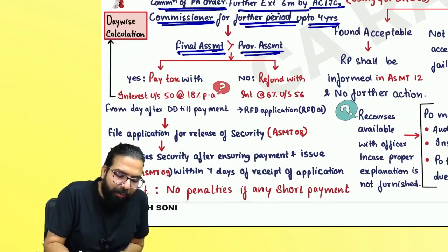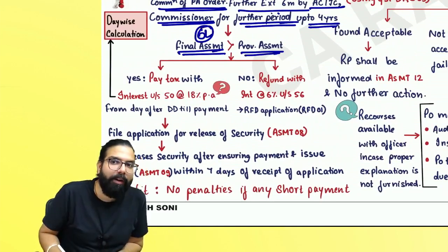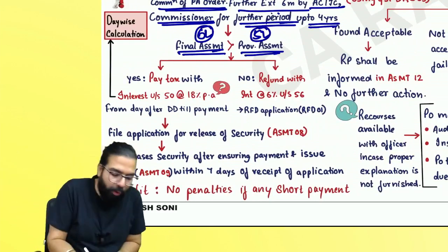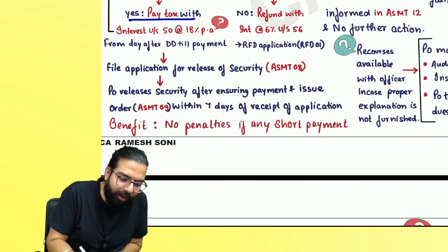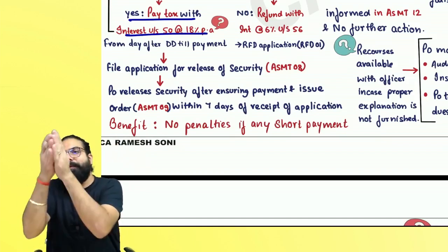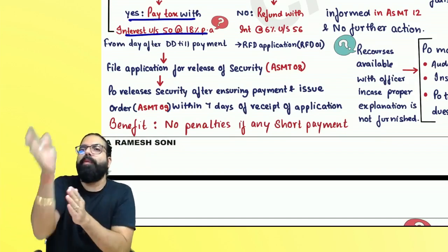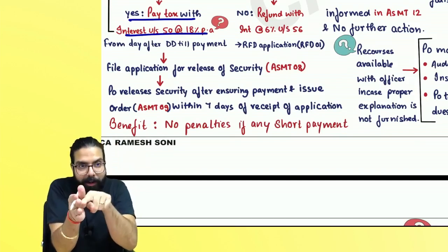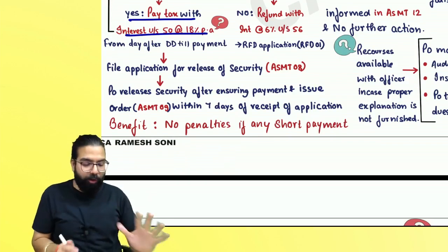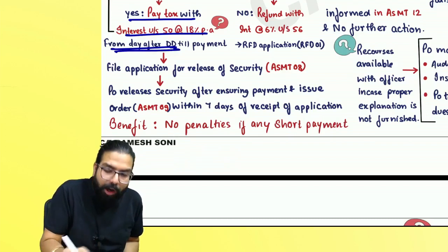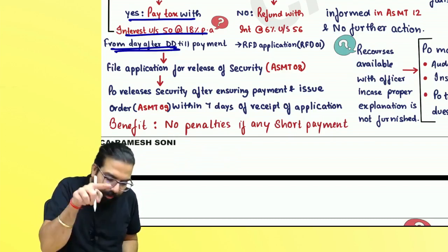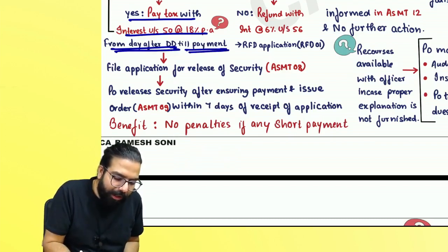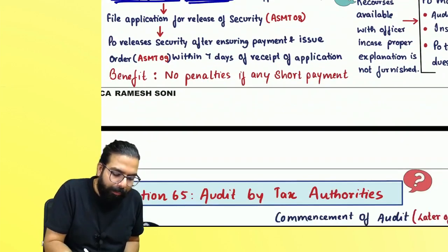Once the provisional assessment is finalized, suppose the final assessment says you have to pay six lakh rupees but you had already paid only five lakh rupees. Then the remaining one lakh rupees you will have to pay along with interest at the rate of 18%. Interest runs from the due date of payment till the date of actual payment.